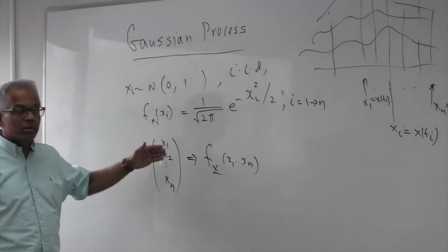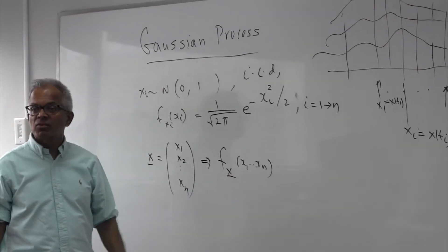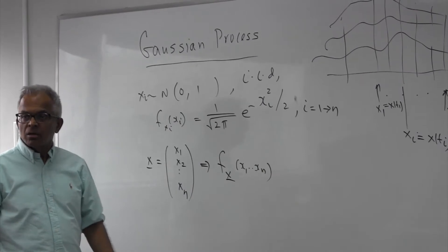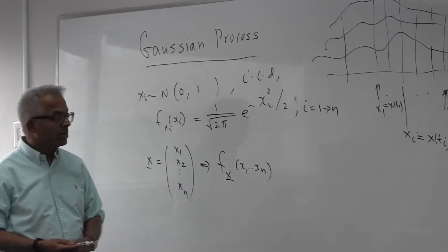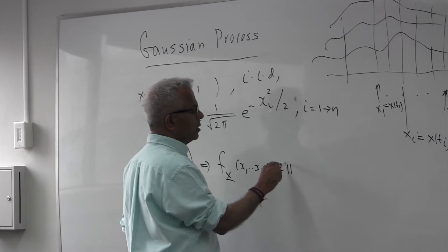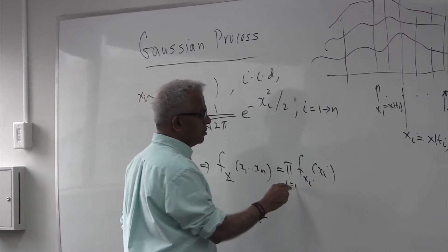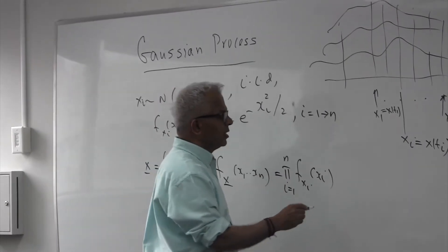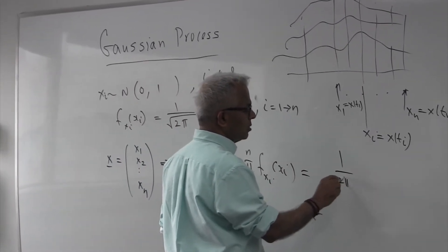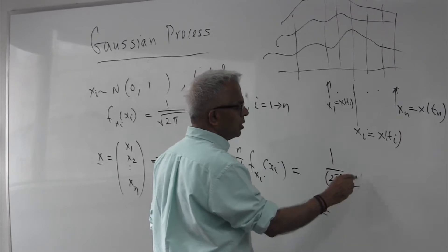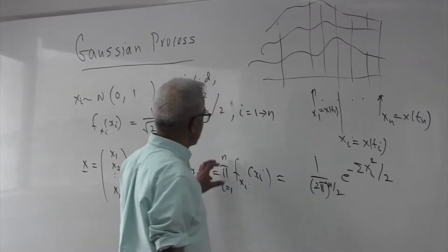How do we find the joint density function of this vector? They are independent and identically distributed, so their joint density function will be a product. This is going to be the product of f(x_i) for i equal to 1 through n, which gives us (2π)^{-n/2} exp(−∑ x_i² / 2).